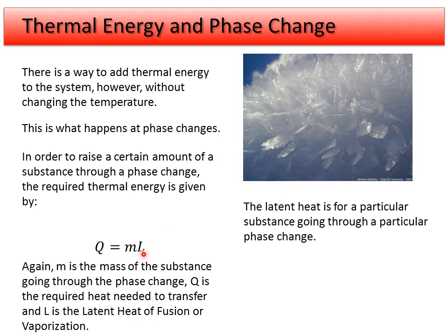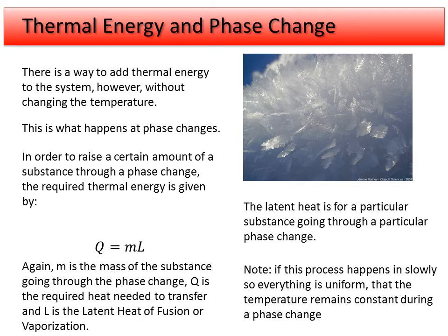Going from liquid copper to solid copper, or from liquid water to solid water (water to ice) — even though they go through the same type of phase change, they have different latent heats, so be careful. Also, temperature remains constant throughout the entire phase change process. When ice melts on a normal day in Michigan, the temperature of the ice and the water being formed stays at the melting point: 32°F or 0°C.